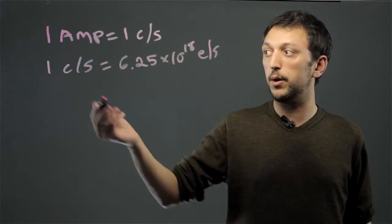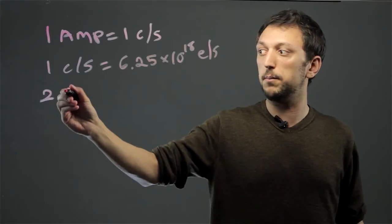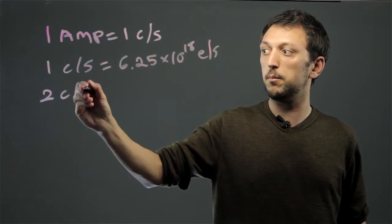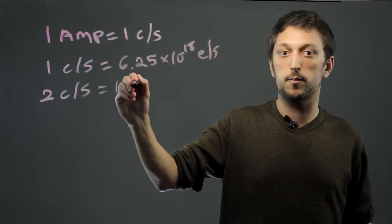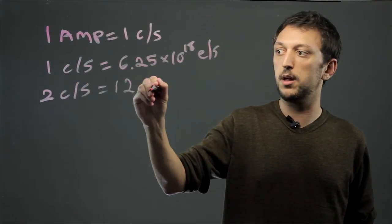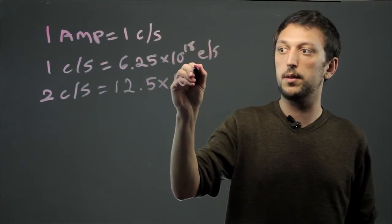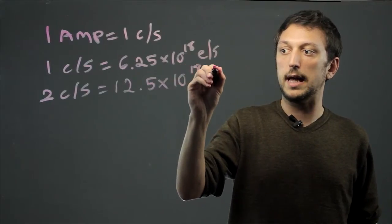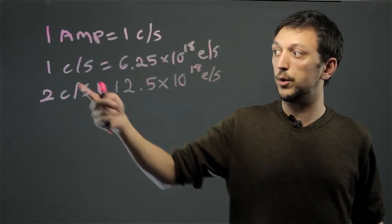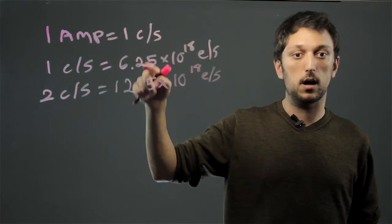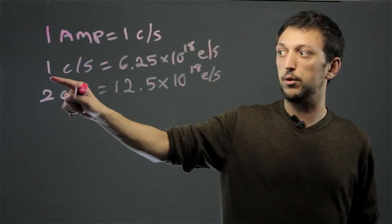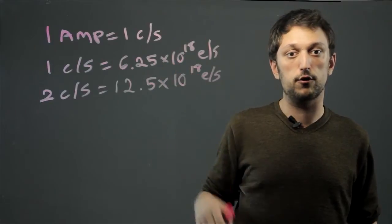That way if we have two coulombs per second we can change that into 12.5 times 10 to the 18th, and so on. You can keep multiplying up as long as you use this basic ratio. Thank you.